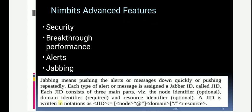In the jabbing mechanism, each type of message or alert is assigned a Jabber ID, called JID. This JID is split into three parts: the node identifier (identifying where the data arrived from), the domain identifier, and the resource identifier. The JID format is: node@domain/resource. Every data placed in folders is represented in this Jabber format.